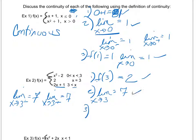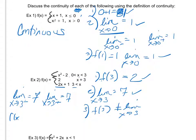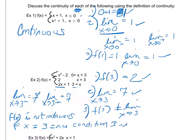Unfortunately, condition three is not met. Even though conditions one and two are satisfied, f(3) equals two does not equal the limit as x approaches three, which equals seven. Therefore, f(x) is not continuous at x equals three, since f(3) does not equal the limit as x approaches three.